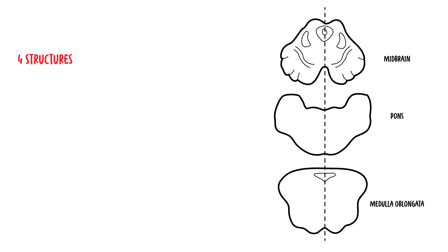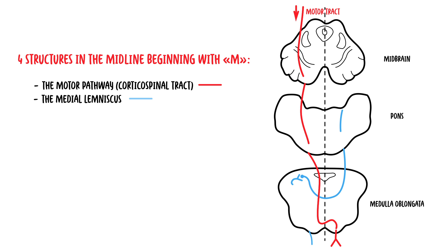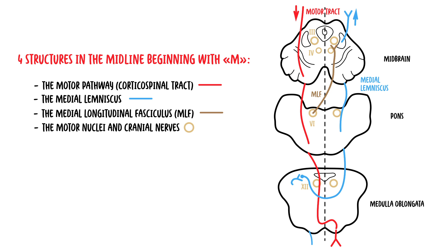The rules of four — as the name suggests, there are four rules, and within each rule everything is related to four. The first rule is that there are four structures in the midline of the brainstem beginning with M: the motor pathways or corticospinal tract which passes the midline, the medial lemniscus, the medial longitudinal fasciculus, and the motor nuclei of cranial nerves, which are also located in the midline.